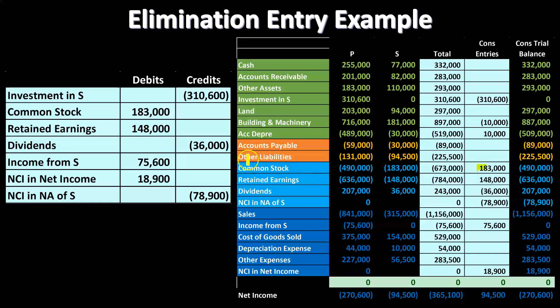After removing those three equity items, we address the income in S. That account needs to be removed — the 94,500 representing net income (revenue minus expenses) for S. Only a portion of that, the controlling interest's share, went to P and was reported under the equity method. That has to be removed, but it doesn't equal the full net income of S as it would with a fully owned subsidiary using the equity method.